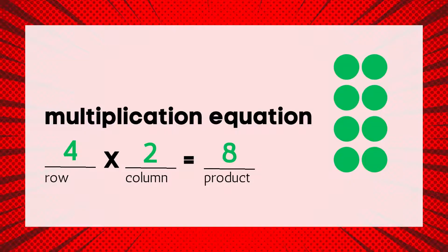So, we know that there are four rows — that's the first factor. Two columns — that's the second factor. And we can count that there are eight circles in all. Our multiplication equation is four times two equals eight.